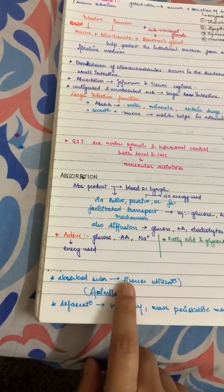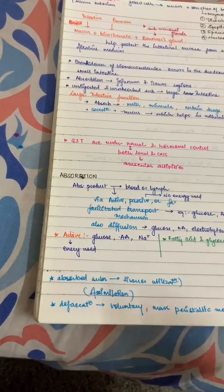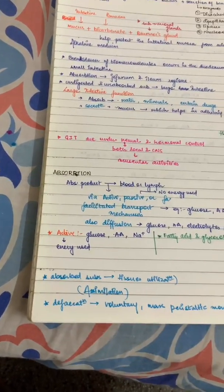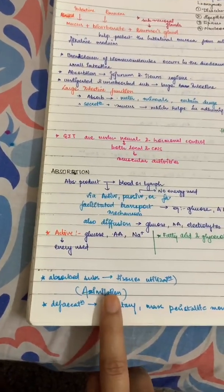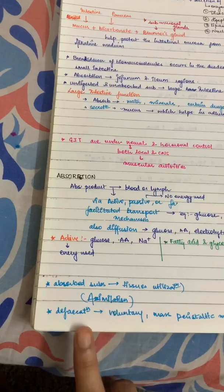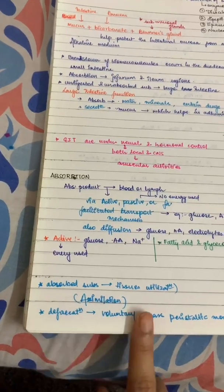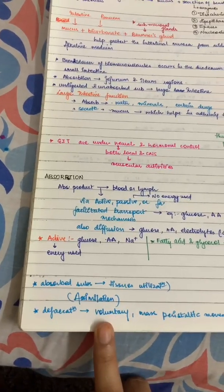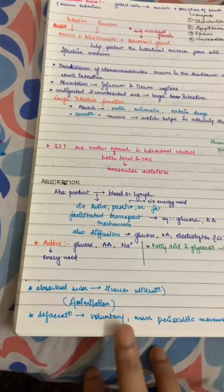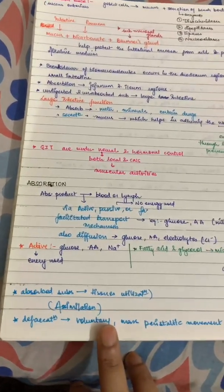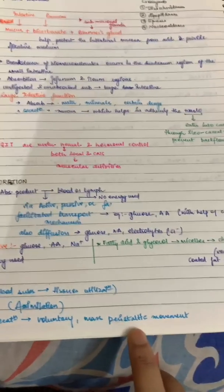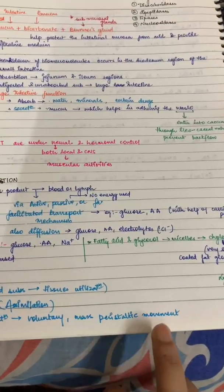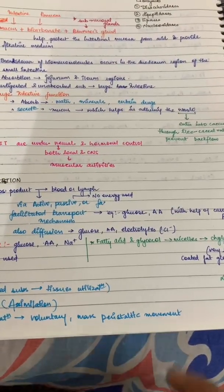The absorbed substances go into tissue utilization, which we call assimilation. Then comes defecation — just know that this is a voluntary activity involving mass peristaltic movement.